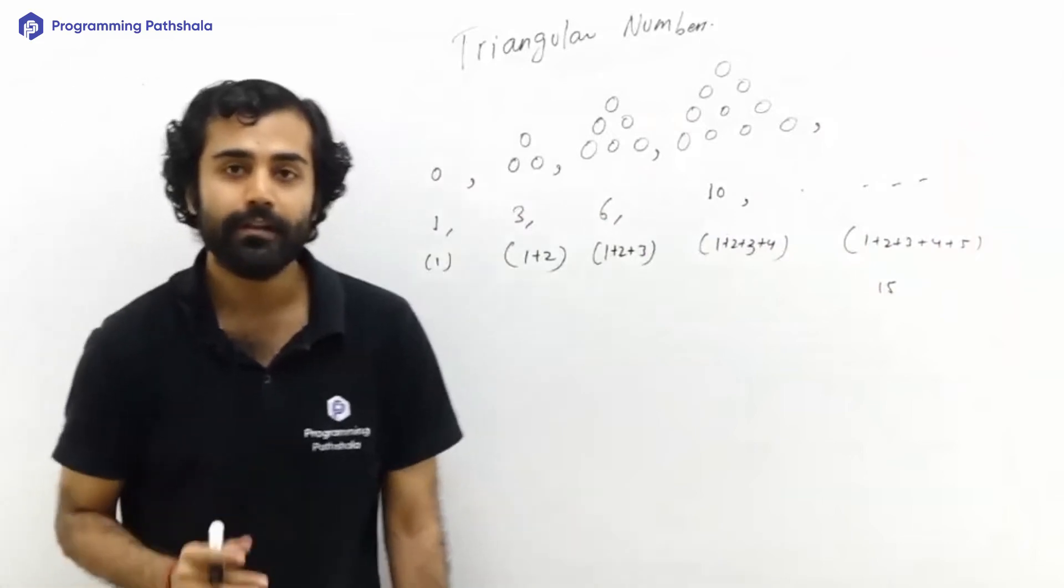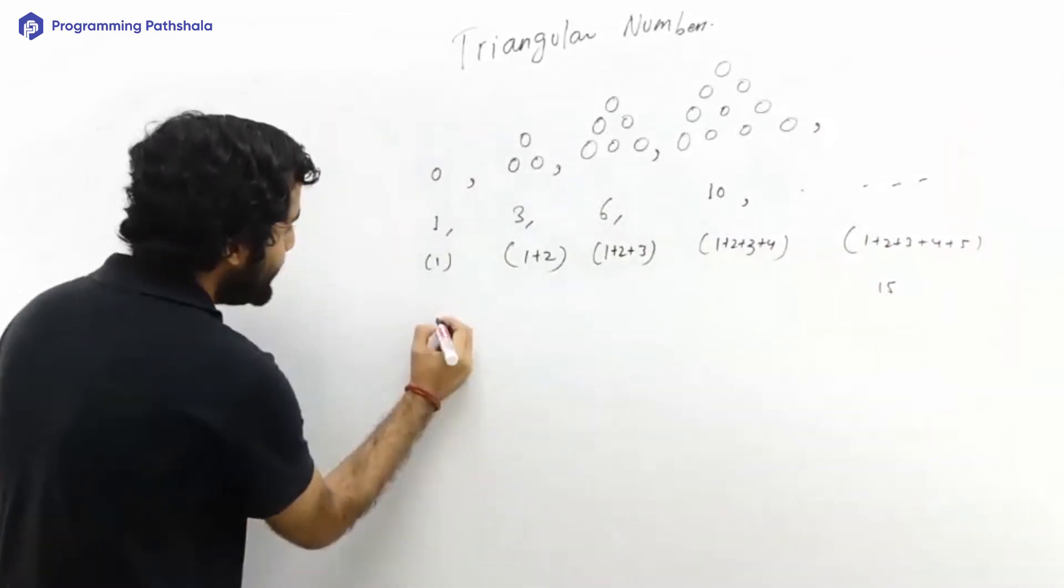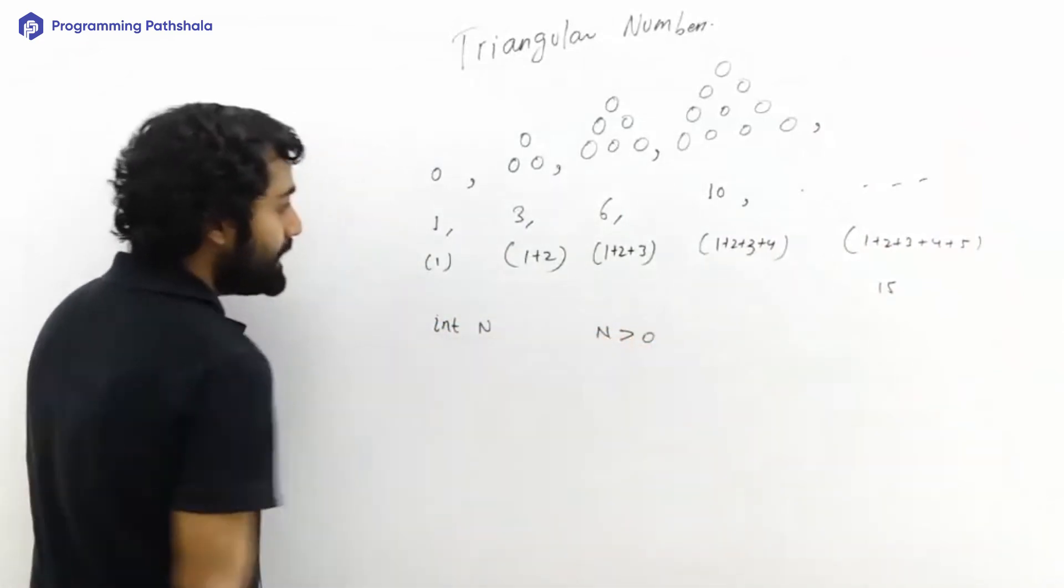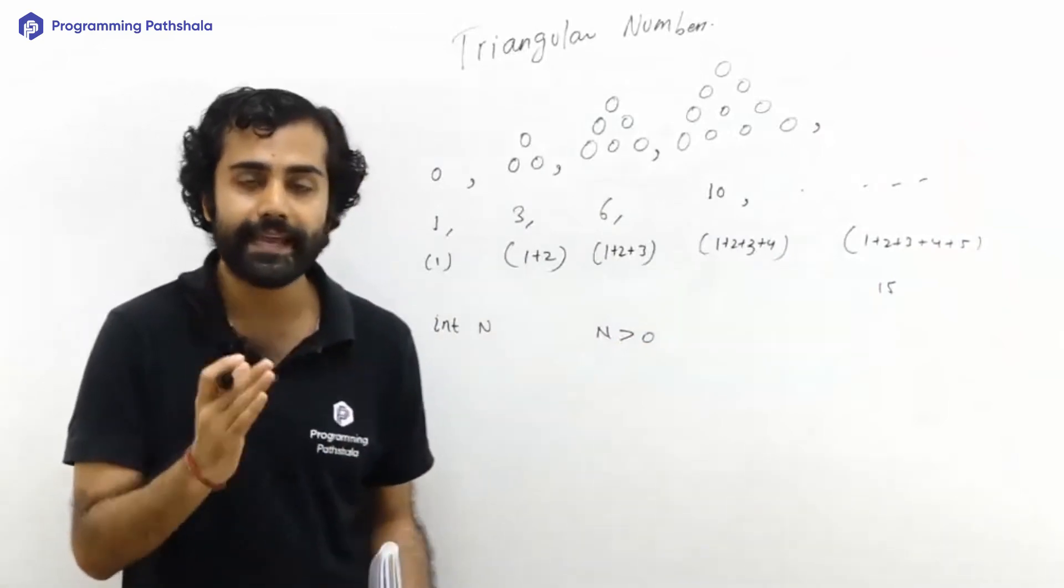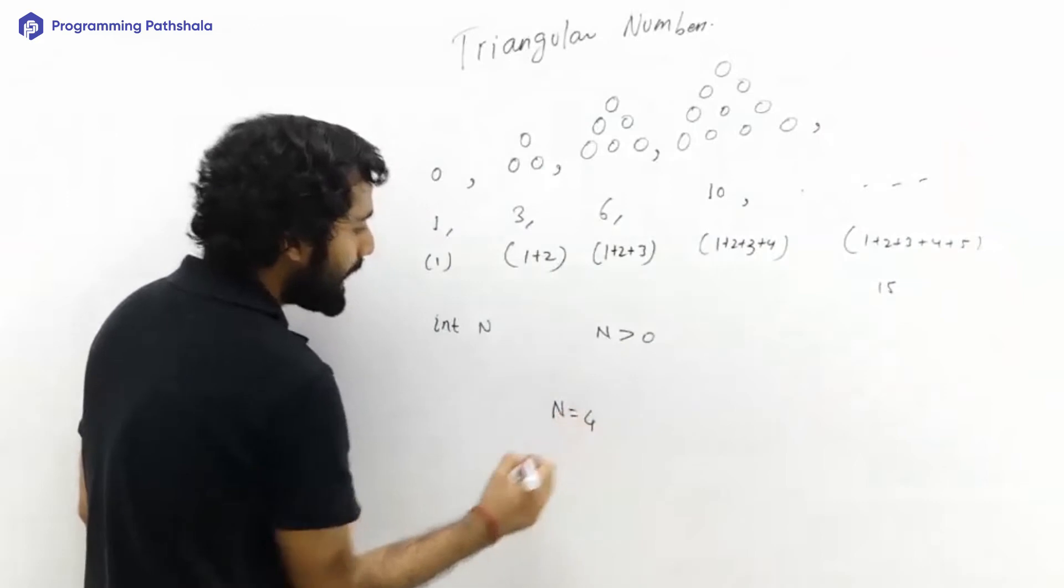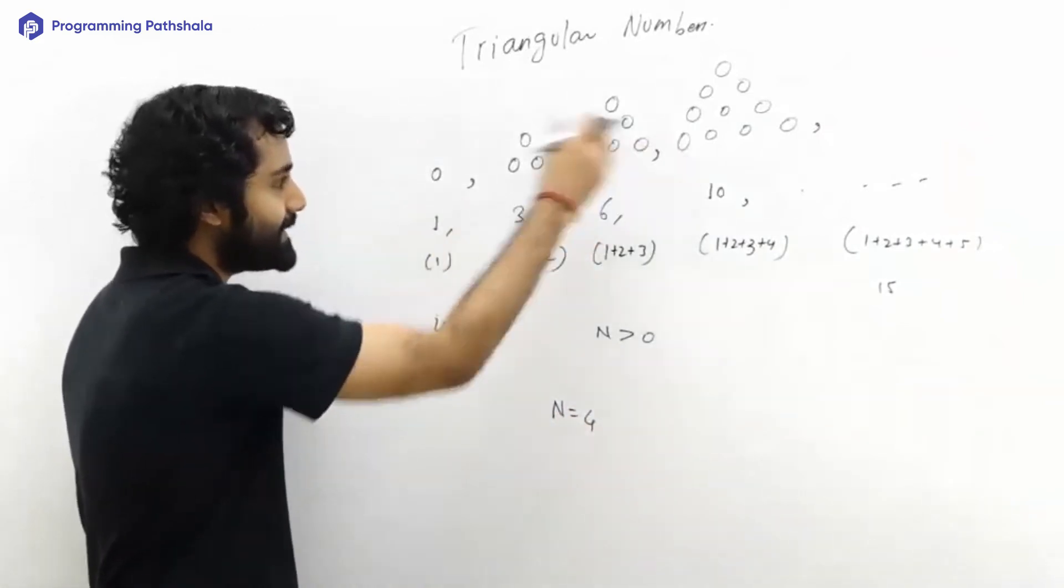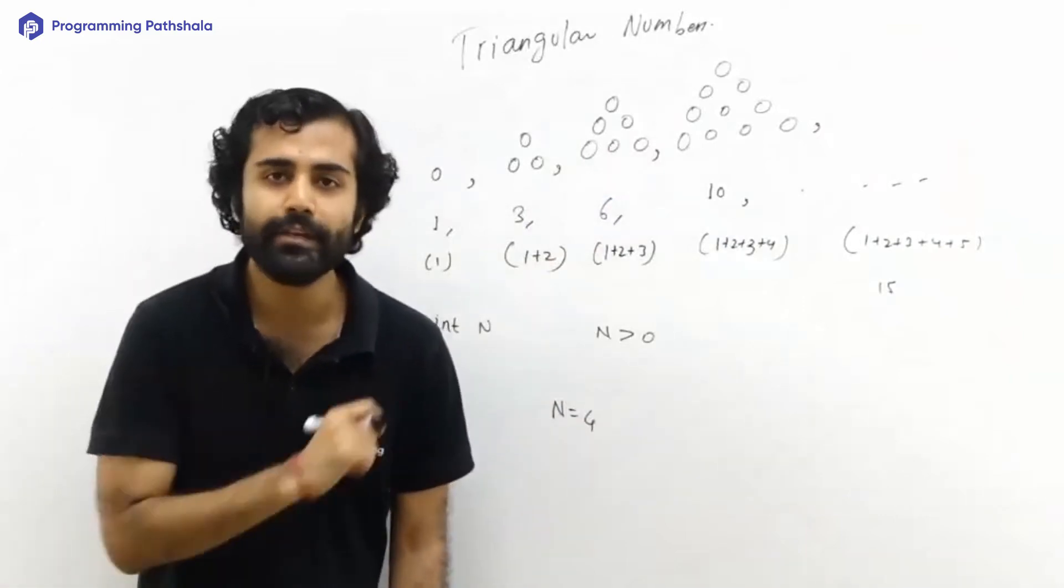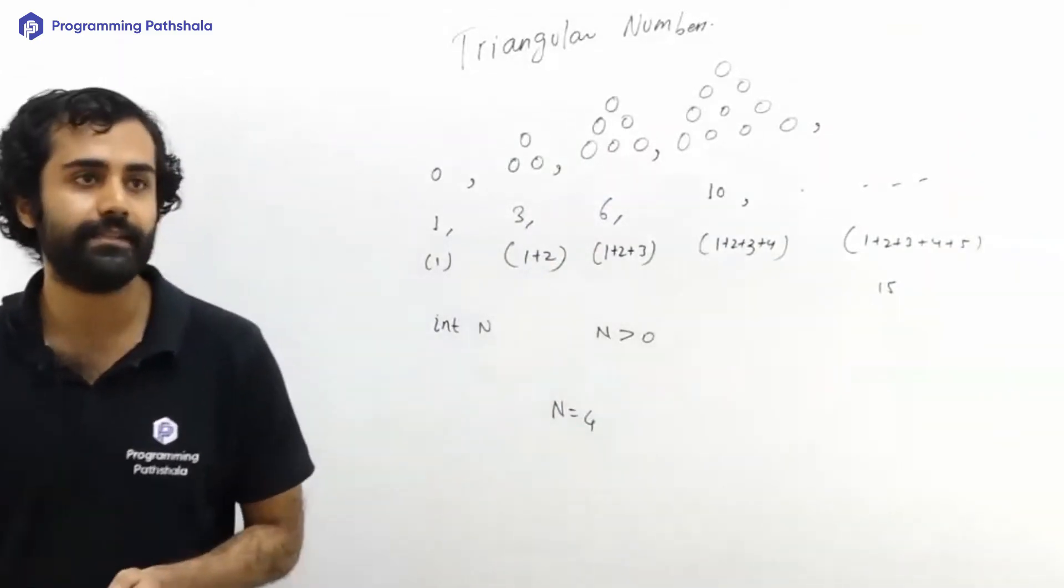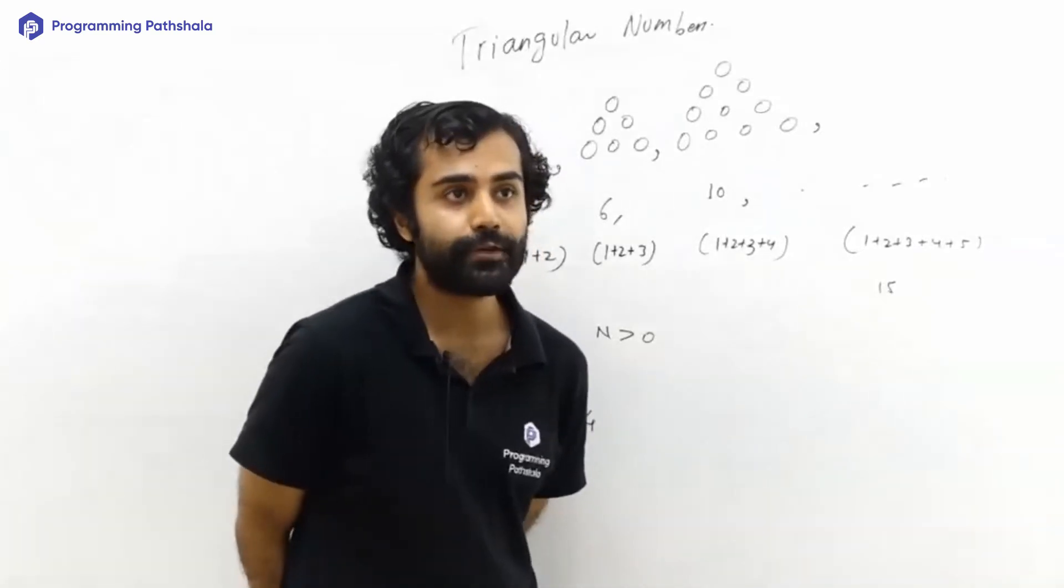Let us say we are given a very simple question. Somebody will give us an integer n, where n will be positive, and asks me to print the first n triangular numbers. So if n equals four, I have to print first four triangular numbers: one, three, six, and ten. How many of you can solve this question and what will be the time complexity? A lot of you are saying you can do it in order n time.